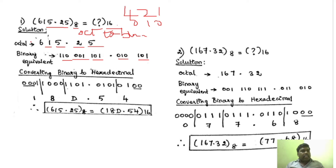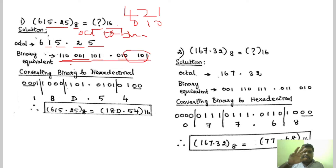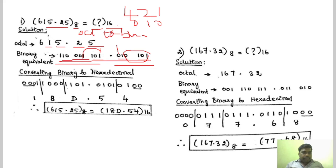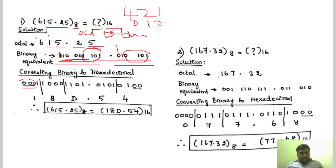Now we have to convert the binary to hexadecimal. We already know the rules to convert binary to hexadecimal — apply that rule. For the integer part, you start from LSB, and for the fractional part, you start from MSB. You group in 4 bits. So grouping gives: 1, 0, 1, 1 and then 0, 0, 0, 1. Only 1 bit was left so I am adding 3 zeros to represent it in 4 bits. For the fractional part, starting from MSB: 0, 1, 0, 1 — that is the first group, and 0, 1 is left so I am adding 2 zeros.